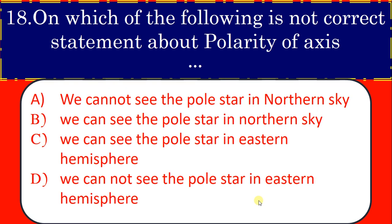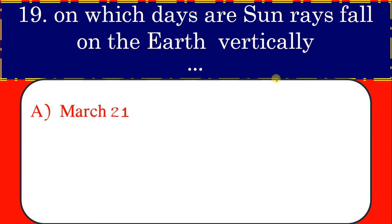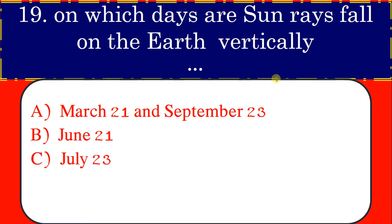Correct answer, we can see the pole star in northern sky. On which days are sun rays fall on the Earth vertically? March 21st and September 23rd. June 21st, July 23rd, December 22nd and June 21st.